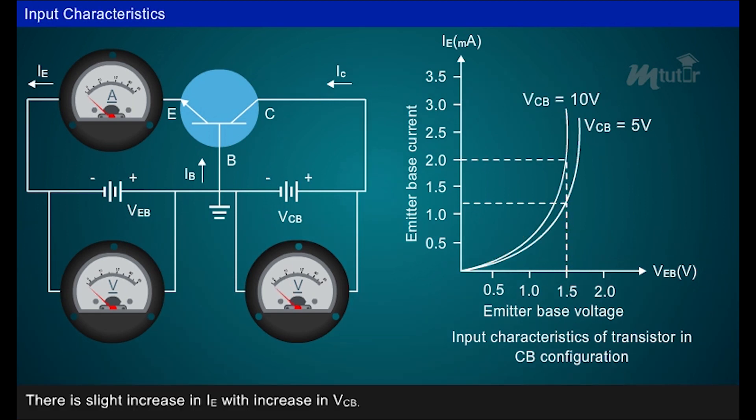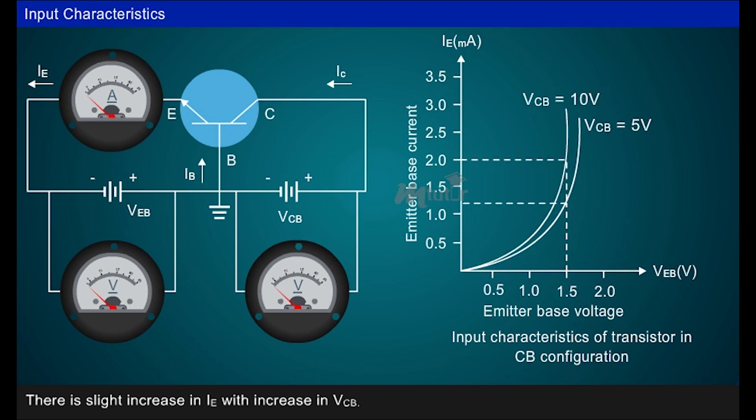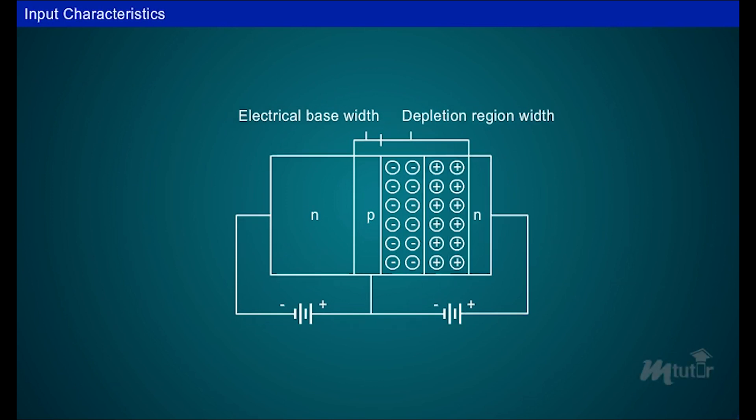Thus, it can be observed that there is slight increase in emitter current, IE, with increase in VCB. When reverse bias voltage VCB increases, the width of depletion region also increases, which reduces the electrical base width.